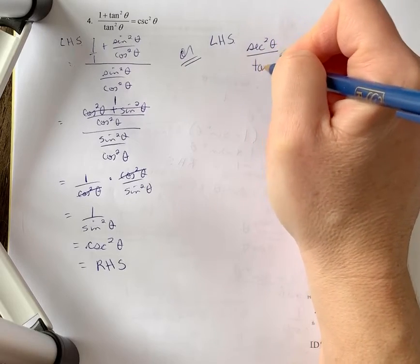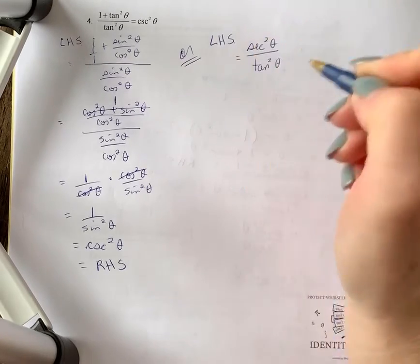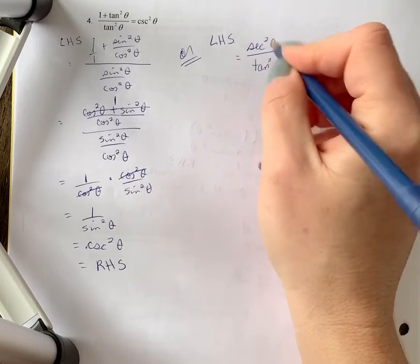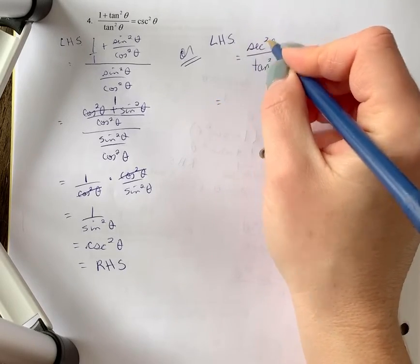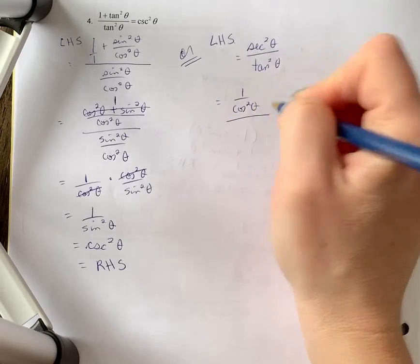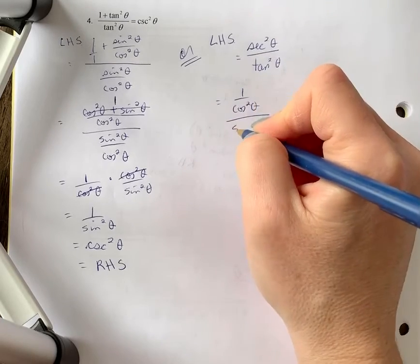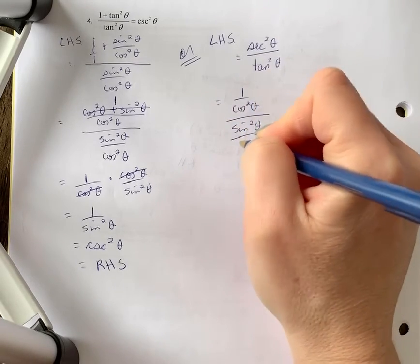Okay, so if I do that, let's see what would happen. Now I'm going to write these as reciprocals. Secant is one over cos squared theta, tan squared theta is sine squared theta over cos squared theta, and now I'm going to multiply by the reciprocal.